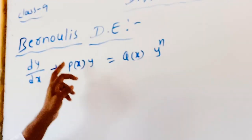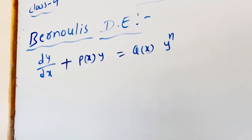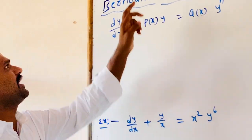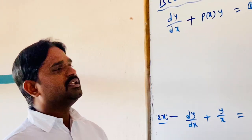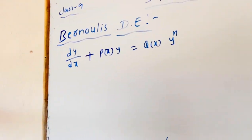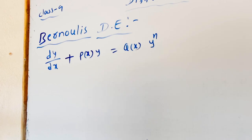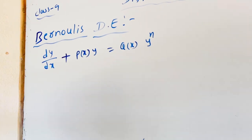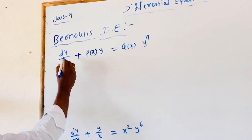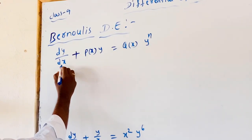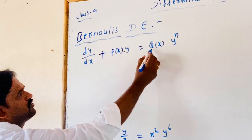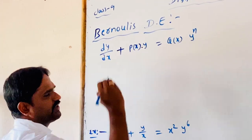Today, we are going to discuss about Bernoulli's differential equation. In previous class, we discussed about the linear differential equation. What is the form of the linear differential equation? dy/dx plus P(x) times y is equal to Q(x) only.